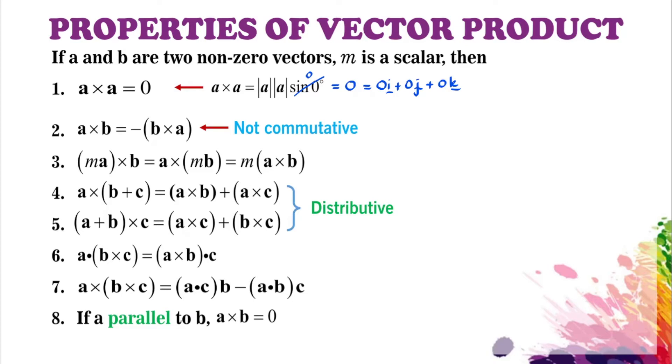Number three: a scalar multiplied with the vector product. Number four and five: distributive properties. Number six and seven: combination of dot product and vector product. And number eight, the most important property: if A is parallel to B, we're going to have A cross B equal to zero.